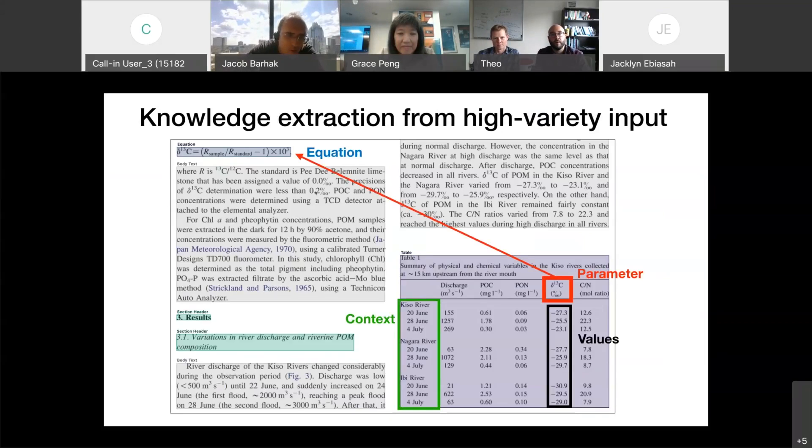We are able to draw connections across these different contexts to have a more comprehensive view of the knowledge described in this document. For example, here you see the parameter that is the output of the equation being presented in this table with specific values associated to this parameter given a certain context. Having access to this data is of paramount importance to many scientific discoveries and to downstream applications for accelerating the scientific process.